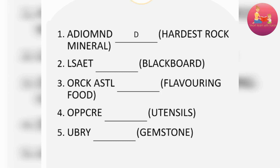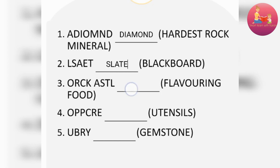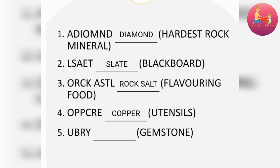Hardest mineral: diamond. Blackboard: slate. Flavoring food: rock salt. Gemstone: ruby. Copper.